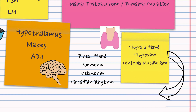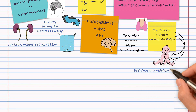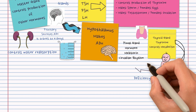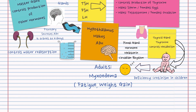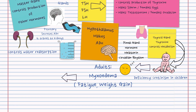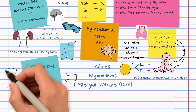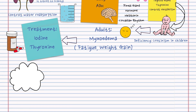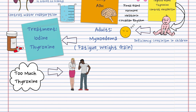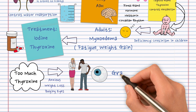If a child or baby is deficient in thyroxine it leads to cretinism — know the symptoms. If an adult is deficient in thyroxine it leads to myxedema, with symptoms such as fatigue, weight gain, and hair loss. To treat this deficiency you can either take iodine or be given thyroxine itself — you should know the connection between iodine and thyroxine production. If you're producing too much thyroxine you can get anxiety, bulging eyes, and rapid weight loss; these are all symptoms of Graves' disease.